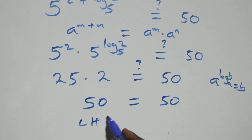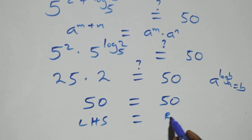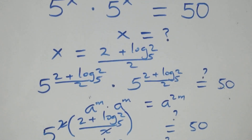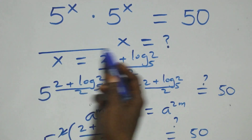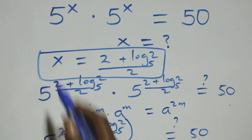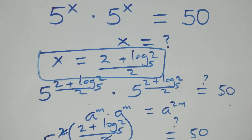And of course 25 times 2 gives us 50, which equals 50 on the right-hand side. The left-hand side equals the right-hand side, and therefore we conclude that x equals 2 plus log₅2, all over 2, satisfies the given problem. Thank you for watching — don't forget to subscribe, turn on the notification bell, share this video, give a thumbs up, and put your comments. See you in the next class, bye for now.